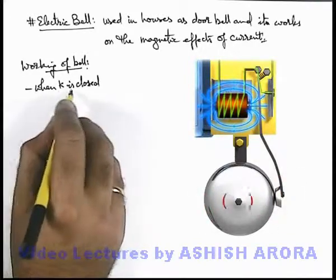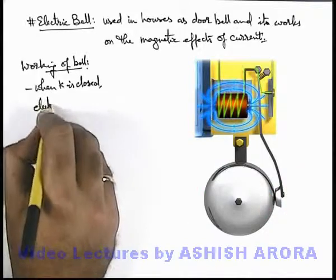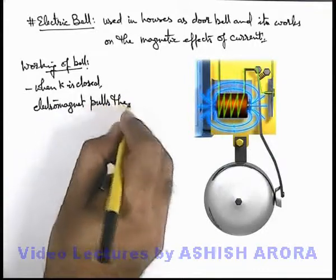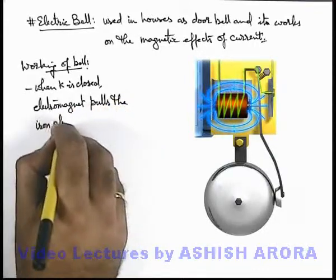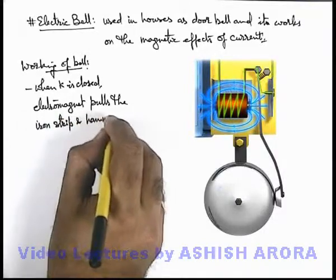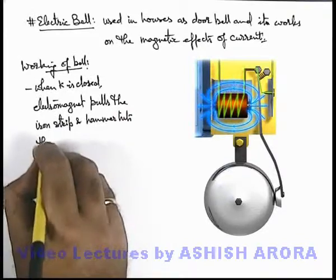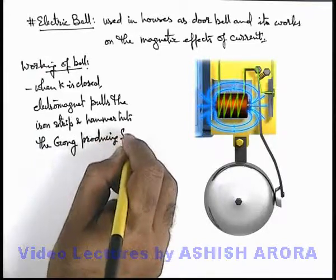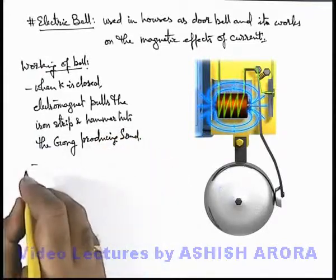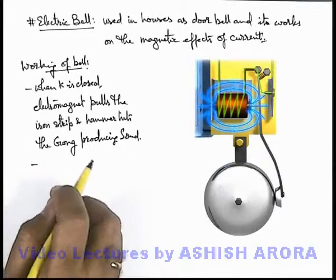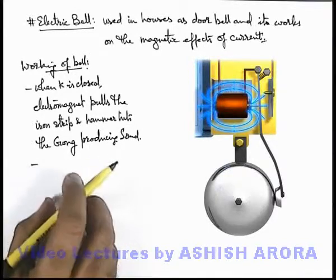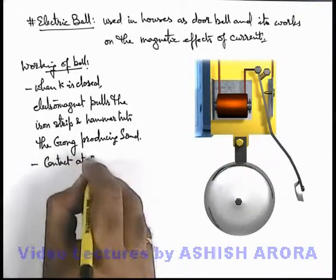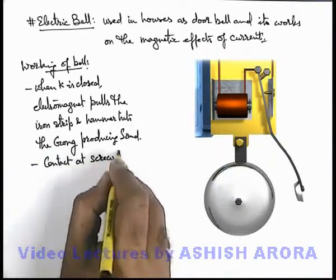In this situation, when K is closed, the electromagnet pulls the iron strip to which it is connected, and due to this the hammer hits the gong, producing sound. As soon as the hammer hits the gong, you can see the contact breaks, because there is an interruptor screw. So we can write: contact at the screw, which is called the interruptor screw, breaks.